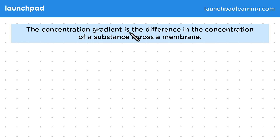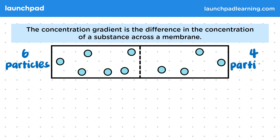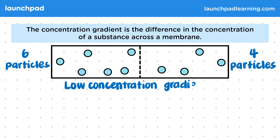The concentration gradient is the difference in the concentration of a substance across a membrane. In this image you can see particles on either side of a partially permeable membrane — for example the inside and outside of a cell. On the left hand side there are six particles and on the right there are four. This shows an example of a low concentration gradient, because there isn't much difference in the number of particles on each side.